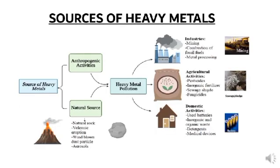The sources of heavy metals: there are natural sources and anthropogenic activities which cause an increase in the concentration of heavy metals in the environment. Natural sources include weathering of natural rocks, volcanic eruption, windblown dust particles, and aerosols. Anthropogenic activities include industries involving mining, combustion of fossil fuels, and metal processing.